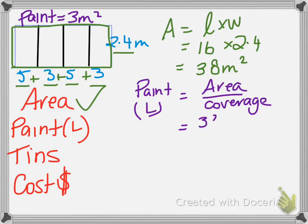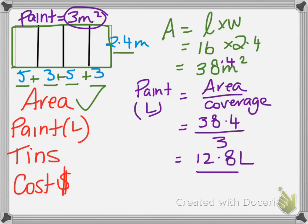So the area is 38. Sorry, it's 38.4. Crawford got that one wrong. Divided by our 3. We're going to cover 3 square metres per litre, remember. And that's going to give us, we need 12.8 litres to cover our whole four walls.